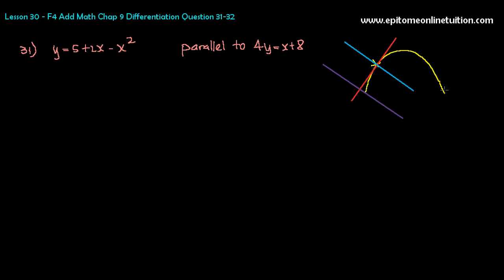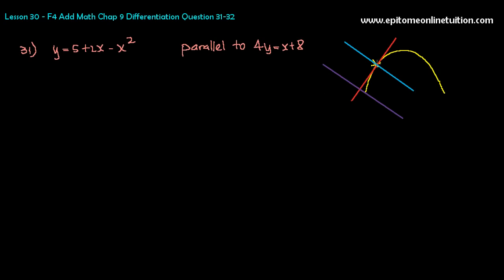You have the curve — the yellow curve here — it's a set-phase curve. And there is a particular point; we do not know what point that is. There is a normal you're supposed to find at this point, which is the blue one. The tangent would be the red one. And it says that the normal is parallel to another line, which is the purple one.